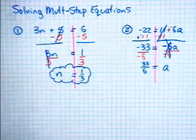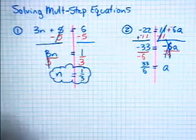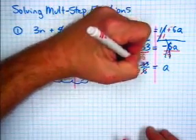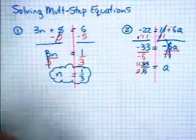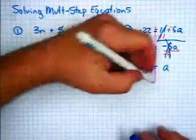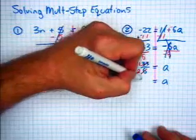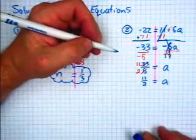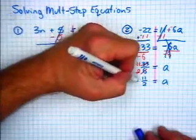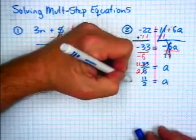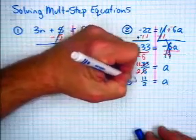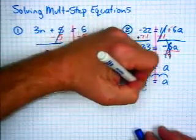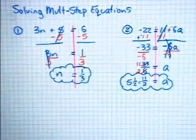But 33 over 6 reduces — it reduces by 3. 3 goes into 6 two times; 3 goes into 33 eleven times. So that means a equals 11 over 2. Or if you prefer to write that as a mixed number, 2 goes into 11 five times with 1 left over, so a equals 5 and a half, or 11 over 2.